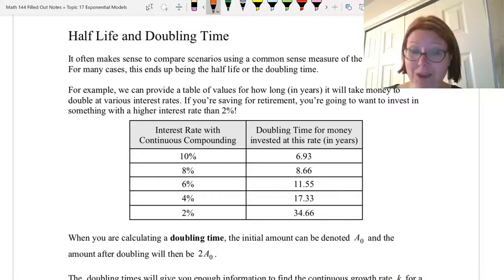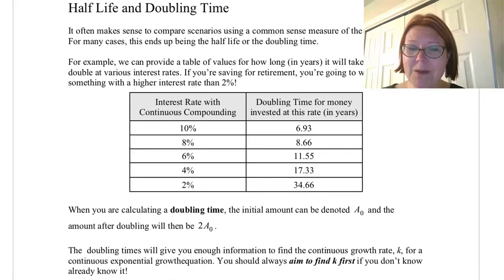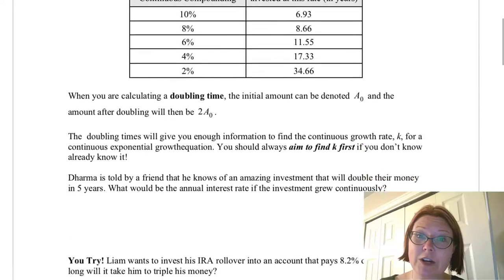Now when you're calculating a doubling time you can just call the initial amount capital A sub-zero and then the amount after doubling you can call 2 times capital A sub-zero. So twice whatever you start with. That sub-zero actually stands for initial. So we're basically saying amount initial and twice the amount initial. Knowing how long it takes for something to double will actually give you enough information to find the continuous growth rate K. You should always aim to find K first if you don't already know it.